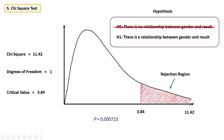Generally, people take decisions based on the p-value. The p-value is the total area to the right of the chi-square value of 11.42 on the distribution. In this case, the total area is very very small after this point, which is why the p-value is also very very small. In statistics, if the p-value is less than 0.05, then we can reject the null hypothesis and conclude there is a relationship between the two variables. Or if the p-value is greater than 0.05, then we can't reject the null hypothesis and conclude there is no relationship. In this case, the p-value is less than 0.05, so we reject the null hypothesis and conclude there is a relationship between gender and result.